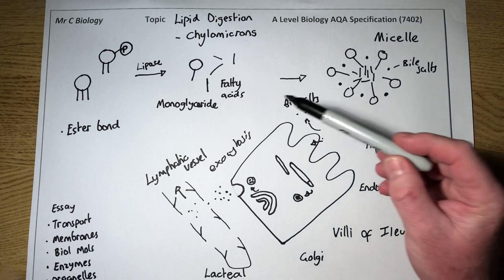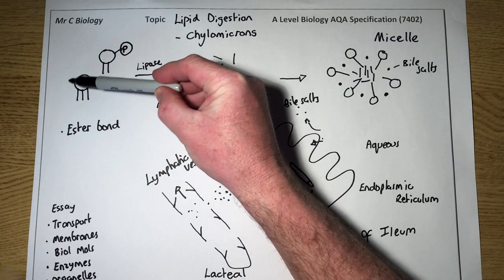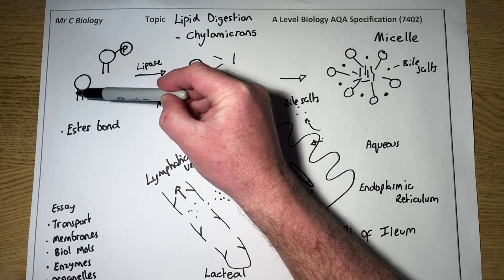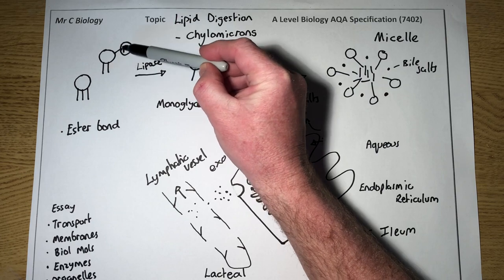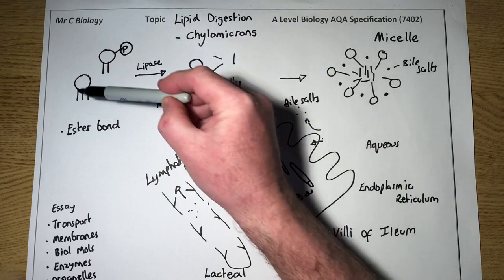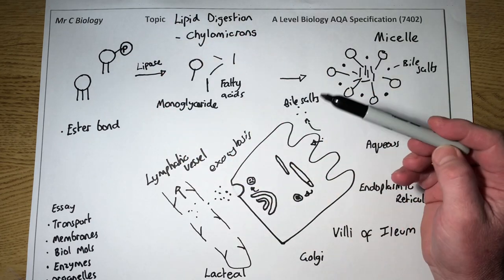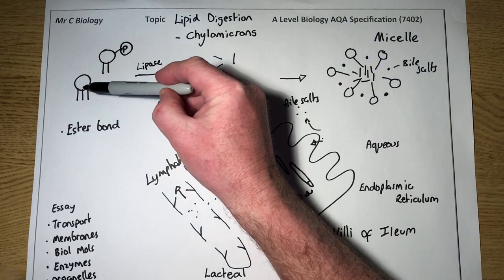We've got a couple of biological molecules we've looked at. Triglycerides and phospholipids. Triglycerides with three fatty acid tails. Phospholipids with two fatty acid tails and the phosphate group. Remember they're joined by ester bonds in a condensation reaction.